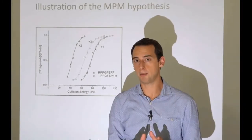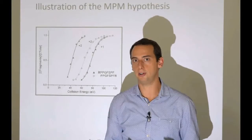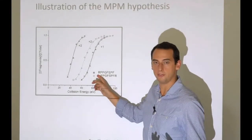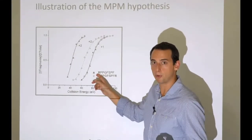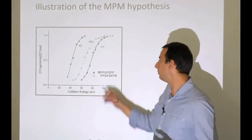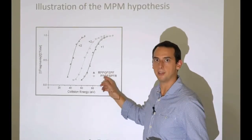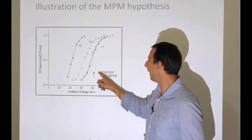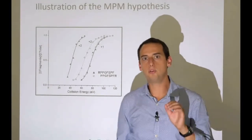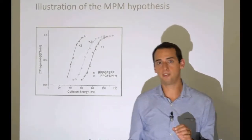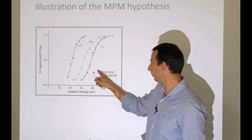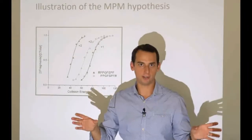Things change dramatically with the doubly charged version. One proton is still at the arginine side chain, but the other proton no longer feels happy there because two positive charges, even on a very basic site, will repel each other. One proton will be at the arginine, and the other will have to find a new place to be.